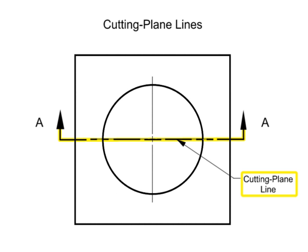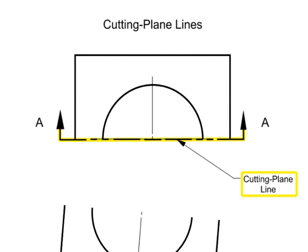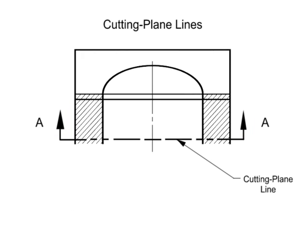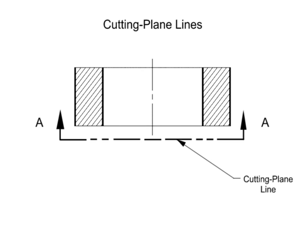Cutting plane lines are used to indicate a plane or planes in which a section is taken. The arrows at the end of the cutting plane line indicate the direction of the view, or the direction your eyes look, after the cut is taken.